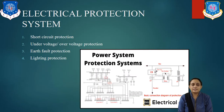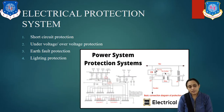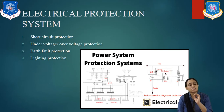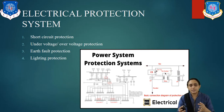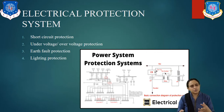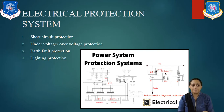Let us understand the electrical protection system. A microprocessor-based electrical protection system is used. The protection system includes short circuit protection, under-voltage protection, over-voltage protection, earth fault protection, lightning protection, etc. In short, it protects the power supply.